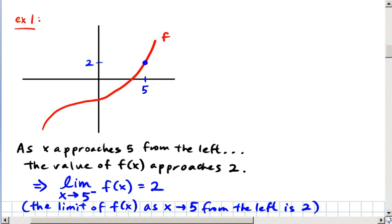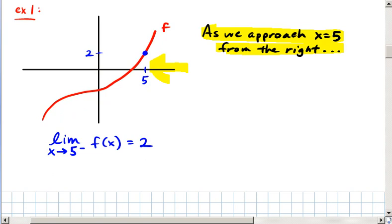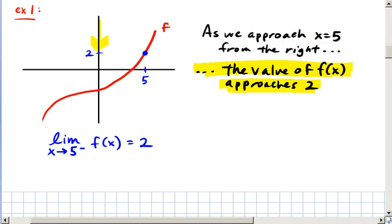As we approach x equals 5 from the right, the value of f(x) also approaches 2. Therefore, we can say the limit as x approaches 5 from the right of f(x) is equal to 2.